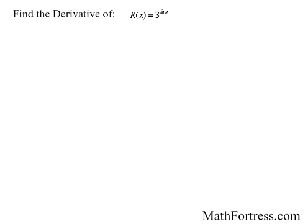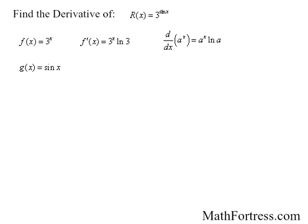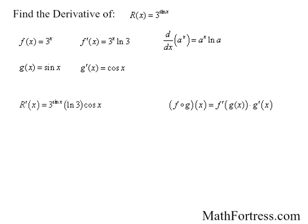Alright, let's try the final example. Find the derivative of r of x equals 3 raised to the power of sin of x. Once again, this is a composition of functions, with the outer function equal to 3 raised to the power of x, and the inner function equal to sin of x. The derivative of the outer function is equal to 3 raised to the power of x, times ln of 3. The derivative of the inner function is cos of x. Applying the chain rule, the final derivative is equal to 3 raised to the power of sin of x, times cos of x, times ln of 3.